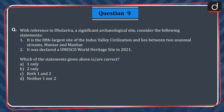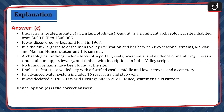The correct answer is Option C. Dholavira is located in Kutch, on the arid island of Khadir, Gujarat, and is a significant archaeological site inhabited from 3000 BCE to 1800 BCE, discovered by Jagatpati Joshi in 1968. It is the fifth largest site of the Indus Valley Civilization and lies between two seasonal streams, the Mansar and Manhar — hence Statement 1 is correct. Archaeological findings include terracotta pottery, seals, ornaments and evidence of metallurgy. It was a trade hub for copper, jewellery and timber with inscriptions in Indus Valley script. Dholavira features a walled city with a fortified castle, middle and lower towns, a cemetery, and an advanced water system including 16 reservoirs and step wells. It was declared a UNESCO World Heritage Site in 2021 — hence Statement 2 is correct. Hence, Option C is the correct answer.